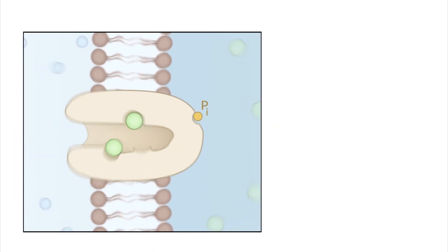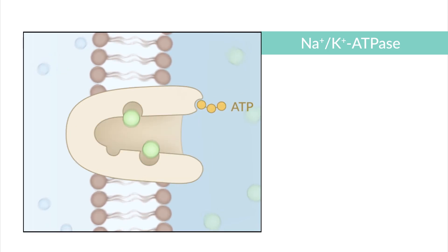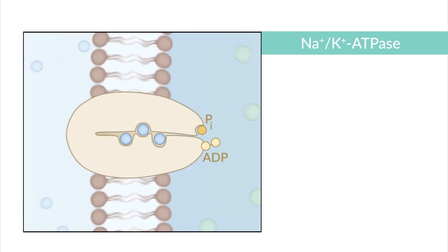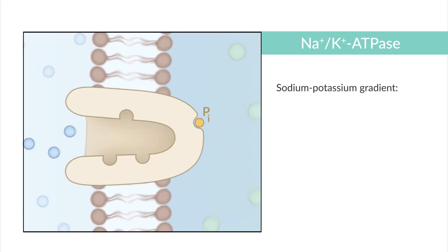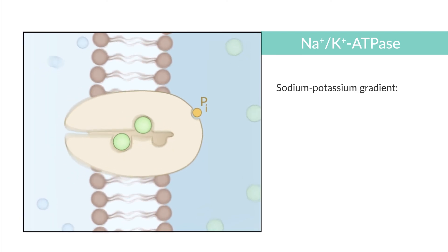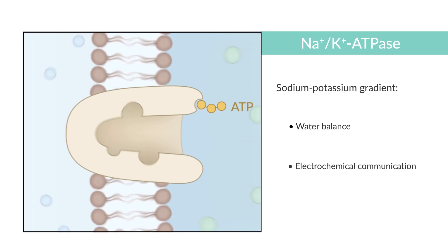Sodium potassium ATPase is one of the most important transporters for maintaining the vital concentration gradients of sodium and potassium. This concentration gradient generated by ATP consumption is fundamental for regulating water content in cells and electrochemical cell communication.